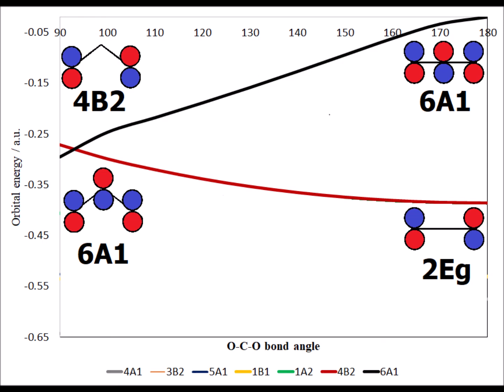So, it is the 6A1 that is the virtual orbital for the actual linear CO2 geometry. As we saw previously, 4B2 drops in energy to become part of the degenerate 2EG pair.